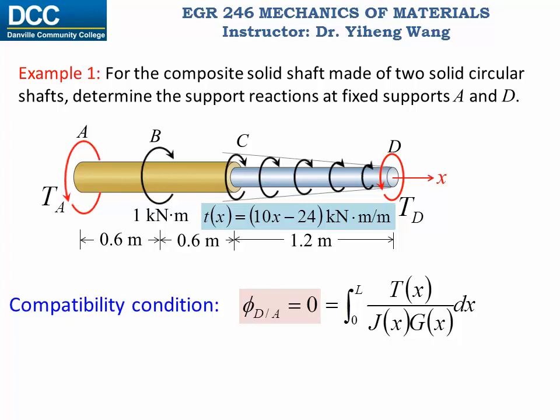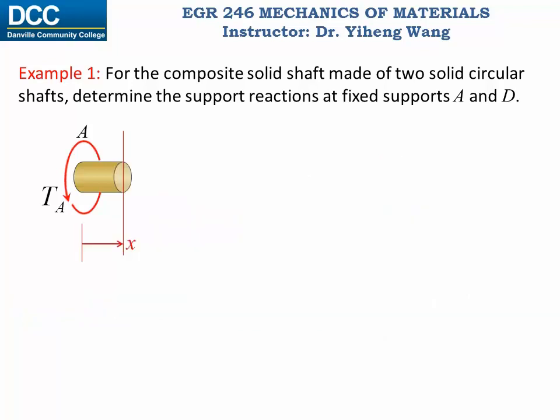We will section this shaft three times: between A and B, between B and C, and between C and D. For the first section, we cut at a random location x between A and B, exposing the internal torque TAB drawn counterclockwise (positive by sign convention). The equilibrium equation gives TA + TAB = 0, therefore TAB = −TA.